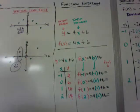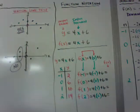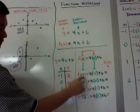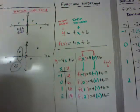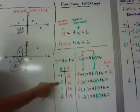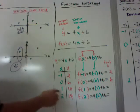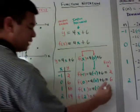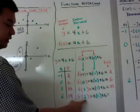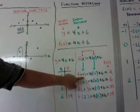In function notation form, f(x) = 4x + 6, you substitute the input in for x. So f(-1) = 4(-1) + 6 = -4 + 6 = 2. f(0) = 4(0) + 6 = 6. f(1) = 4(1) + 6 = 10. f(2) = 4(2) + 6 = 8 + 6 = 14. You say 'f of negative 1,' 'f of 0,' 'f of 1,' 'f of 2.'